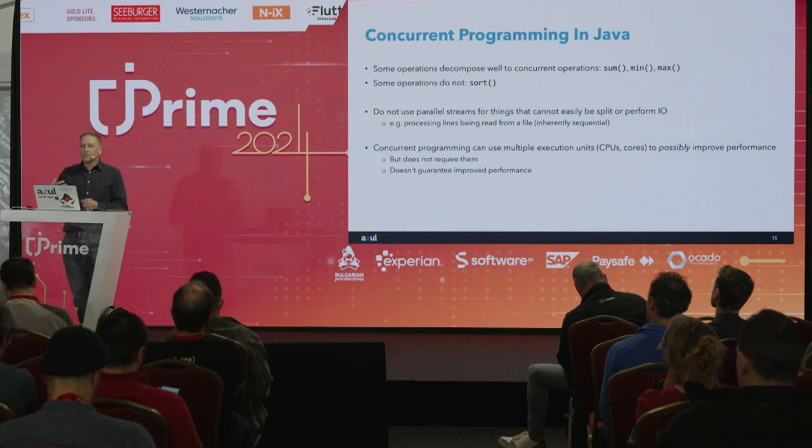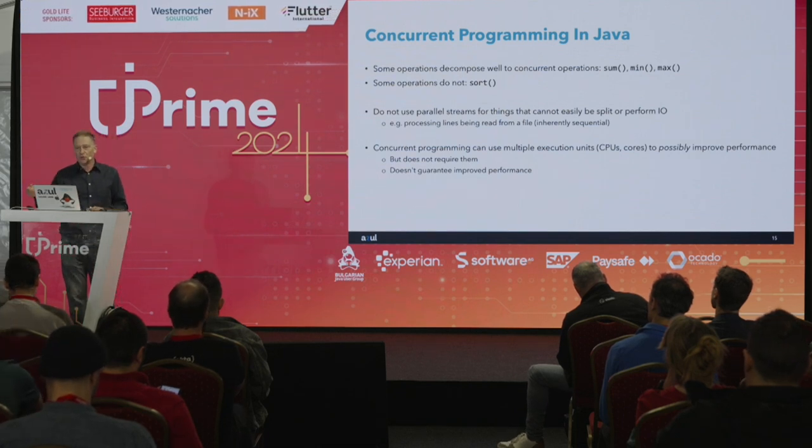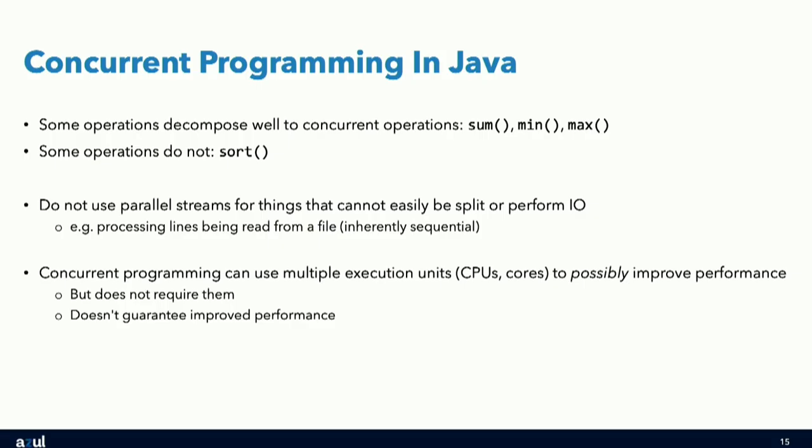Concurrent programming can use multiple execution units — CPU cores — and can possibly improve performance, but it doesn't necessarily require them or guarantee improved performance.